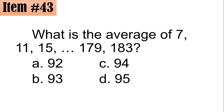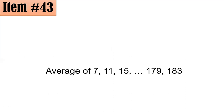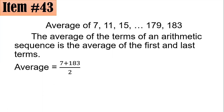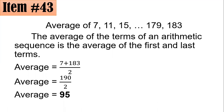What others usually do is find the sum of everything and divide by the total number of terms — that's fine. But actually, if you notice, these are terms of an arithmetic sequence. The shortcut for getting the mean of an arithmetic sequence is to get the mean of the first term and the last term. So all we do is add the first and last term and divide by 2: 7 plus 183 divided by 2, that's 190 divided by 2, which is 95. Letter D.